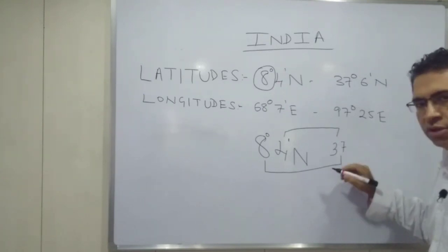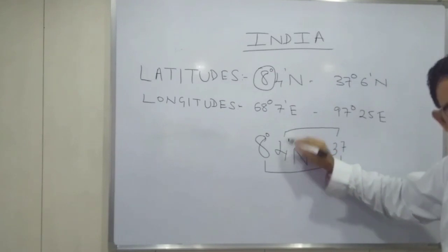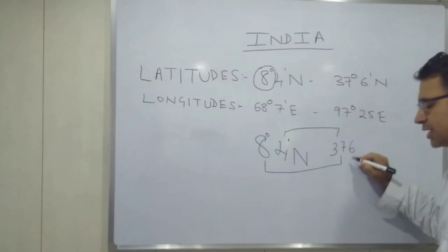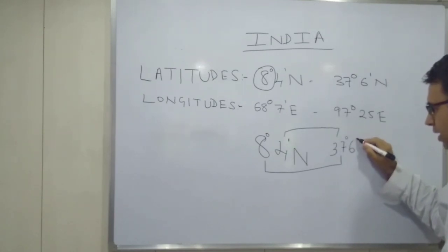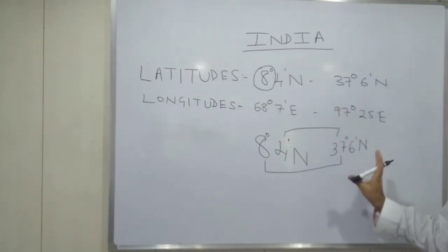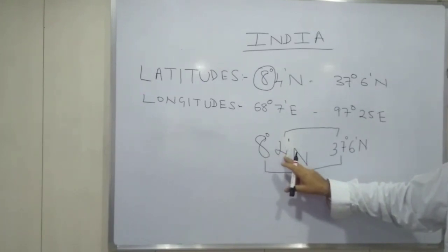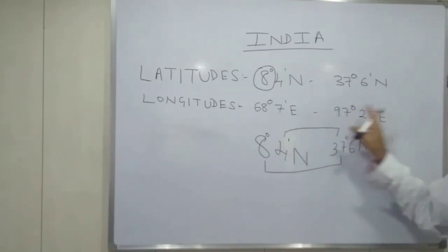I continue this trend — I was deducting one from both numbers. If I deduct one from seven, I get six. And thus I get the second latitude measure: 37 degrees 6 minutes North. I started with eight, went into half, subtracted one from each digit, and I got the second measure. Latitudes done!